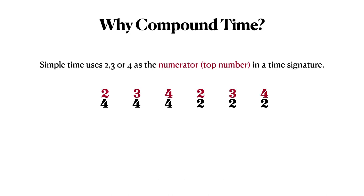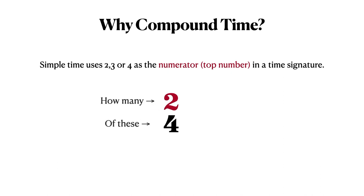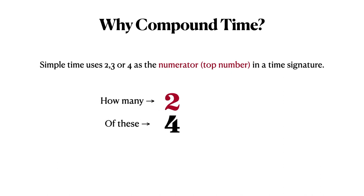Simple time signatures are of the type that use a 2, 3, or 4 in the numerator, or top number, of a time signature. For example, in 2/4 time, the top number 2 shows us that there will be 2 quarter notes per measure. The numerator or top number shows you how many note durations there are per measure. The bottom number, or the denominator, shows you the type of note to use to fill the bar. In this example, 2/4 time, there are 2 quarter notes per measure — the 2 telling you how many, and the bottom 4 representing the quarter note.